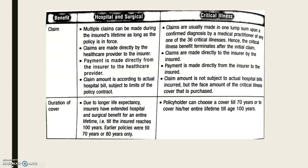For hospital and surgical claims, multiple claims can be made during the insured's lifetime as long as the policy is in force. Claims are made directly by the healthcare provider to the insurer, and payment is made directly from the insurer to the healthcare provider, not to the patient. The claim amount is according to the actual hospital bill, subject to the limit of the policy contract.